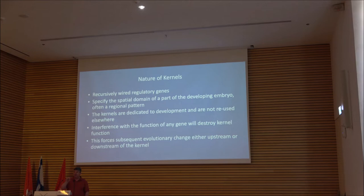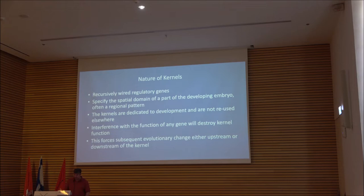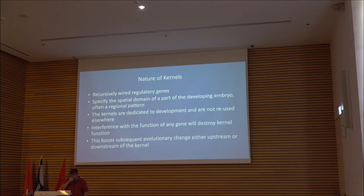The claim is that these things should be stable across larger clades, whether the kernel is shared across bilaterians or across echinoderms — which is an experimental question. One of the claims in the 2006 paper is that kernels are dedicated to development and are not reused elsewhere, and that interference with the function of any gene because of this recursive wiring will destroy kernel function, so selection acts upon the kernel as a whole rather than any component of it.